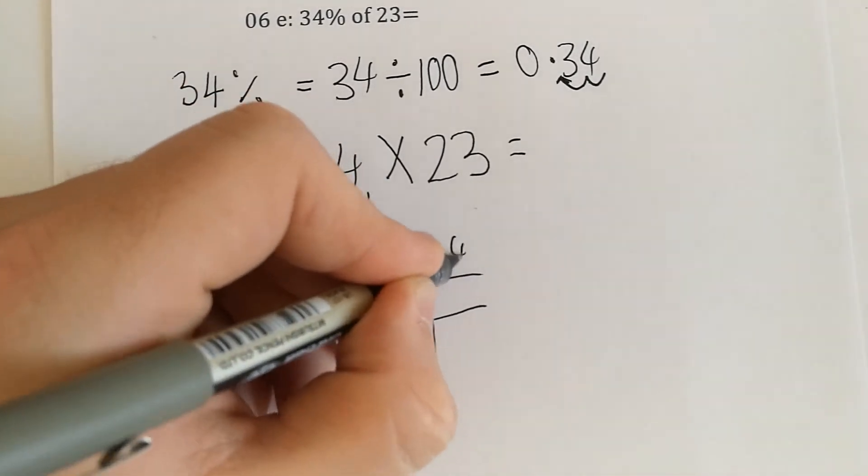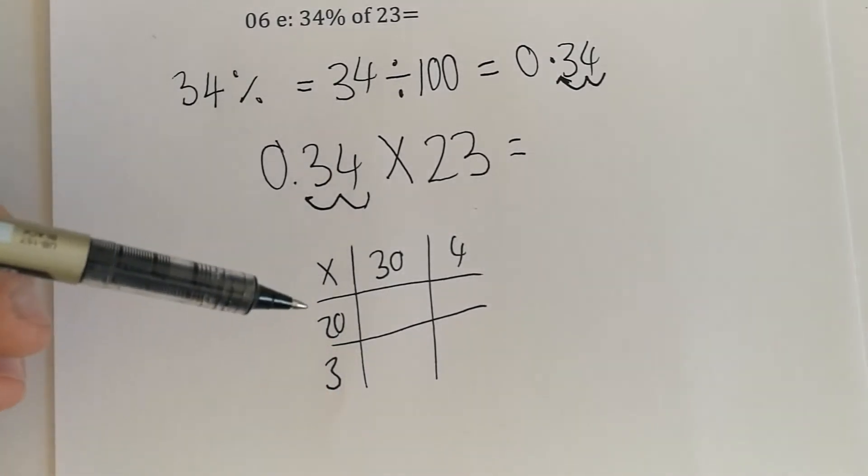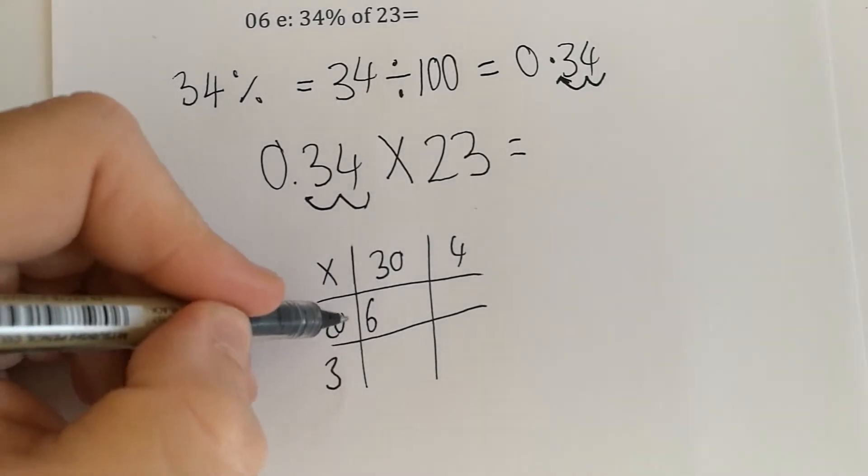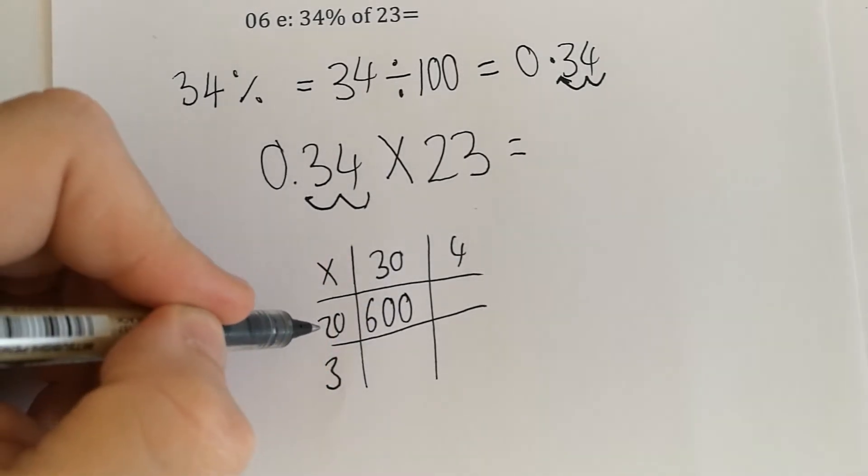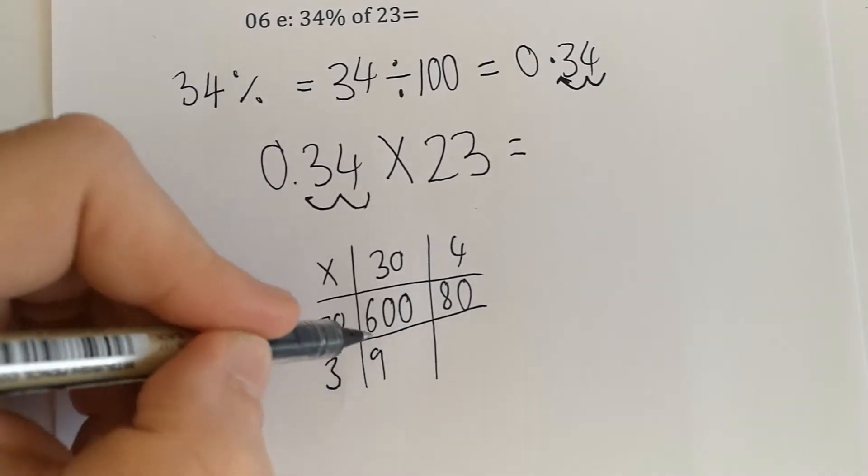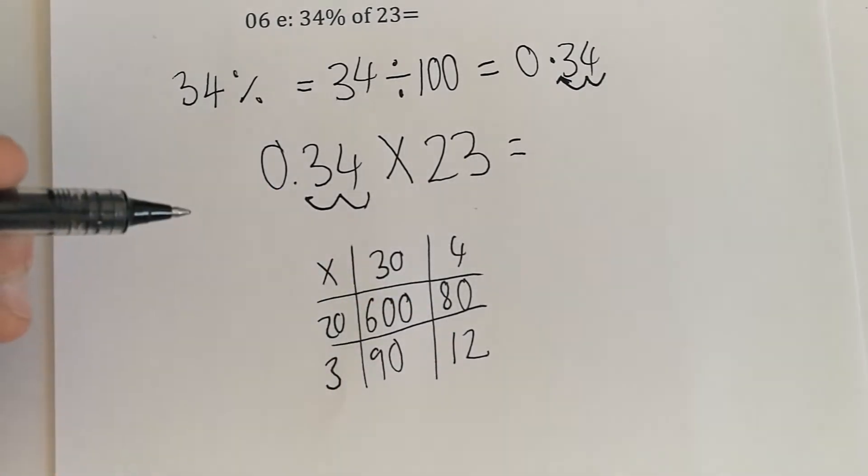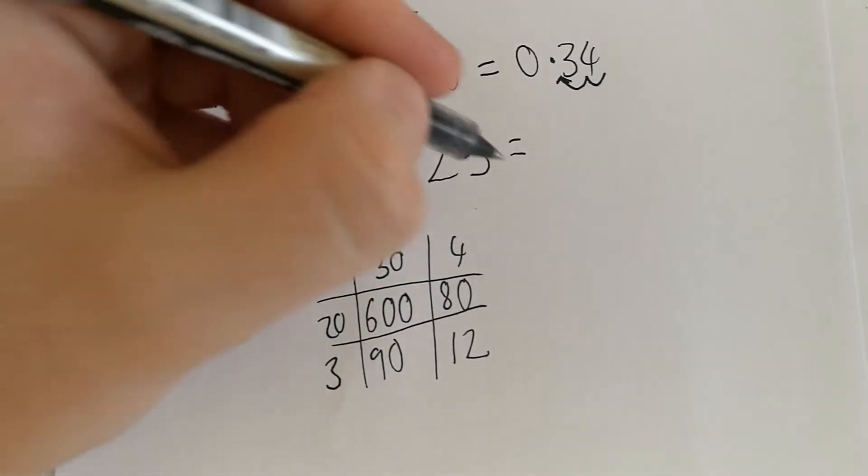30 and 4, 20 and 3. Then we just do what we've done in the past. 3 times 2 is 6 with two zeros. 2 times 4 is 8 with an extra zero. 3 times 3 is 9 with a zero, and 3 times 4 is 12. We then need to add it up.